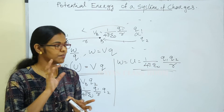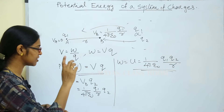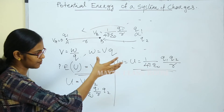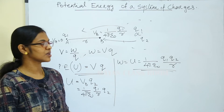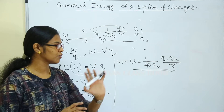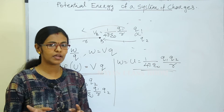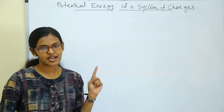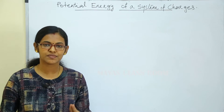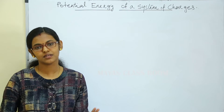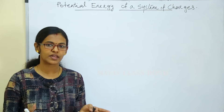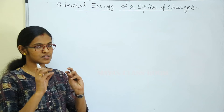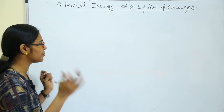The potential energy equation for two charges represents the potential energy of a system of charges. If we have a single charge, the equation is v into q. If we have two charges, the potential energy is 1 by 4 pi epsilon 0 times q1 q2 divided by r.